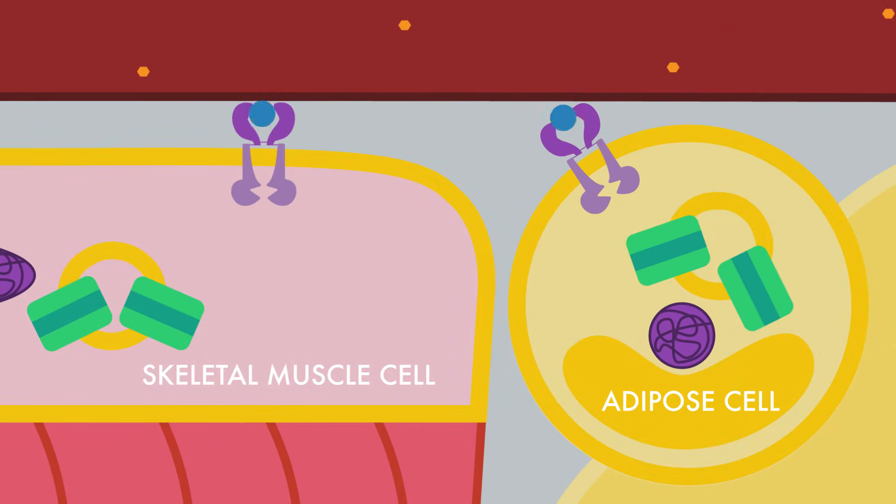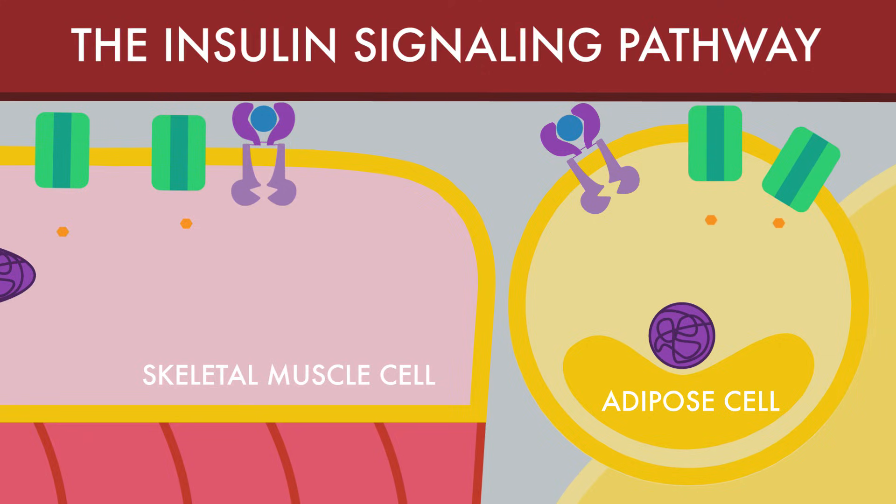The interaction between insulin and its receptor travels to the interior of the cell, where it triggers a number of changes in cell metabolism, including glucose uptake by cells in response to elevated blood glucose levels. This process is known as the insulin signaling pathway.